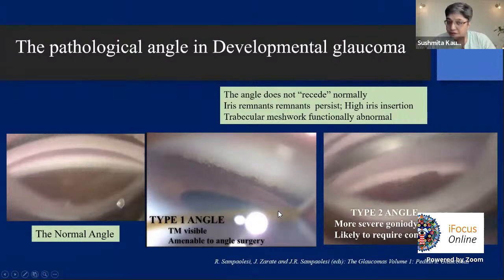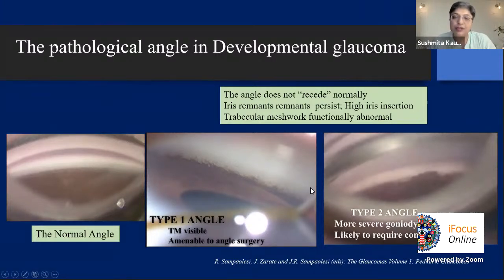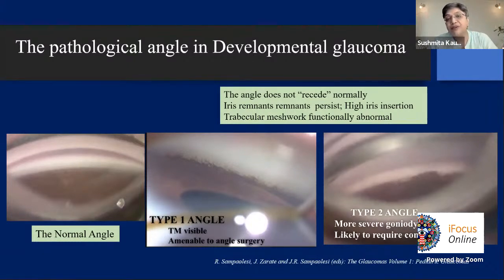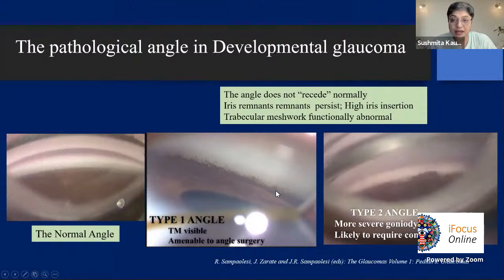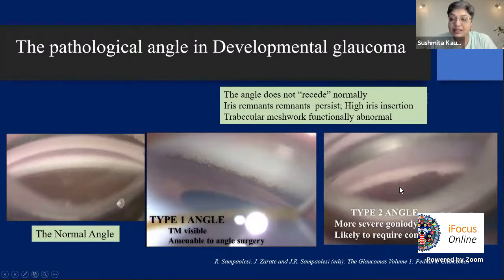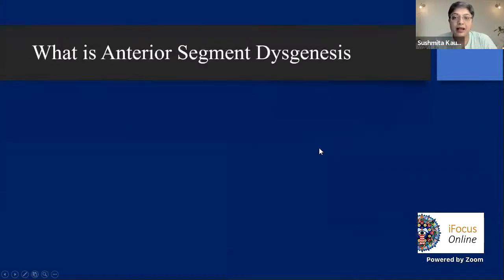Sampaolesi wrote a wonderful textbook of pediatric glaucoma — our Bible — and described Type 1 and Type 2 angles from hundreds of goniotomies, studying why some worked and others didn't. From his drawings he found that goniotomy worked in Type 1, where the trabecular meshwork was visible and amenable to surgery. In Type 2, the iris has not receded at all — it's covering the trabecular meshwork — making goniotomy unlikely to succeed.